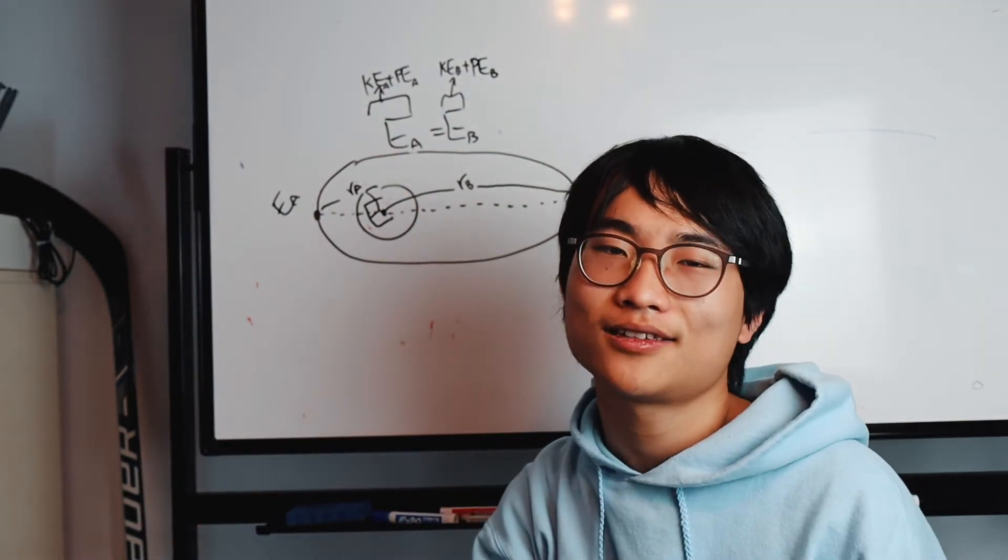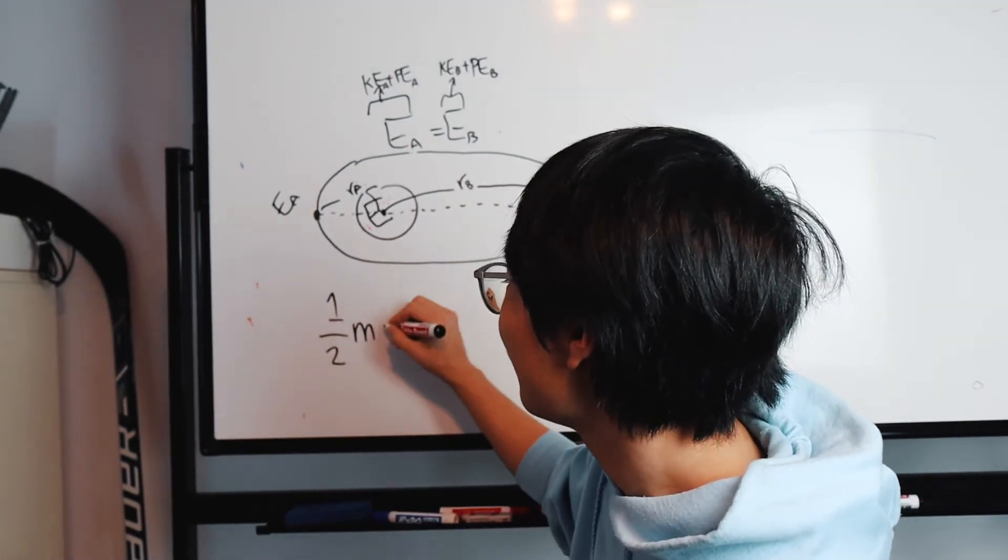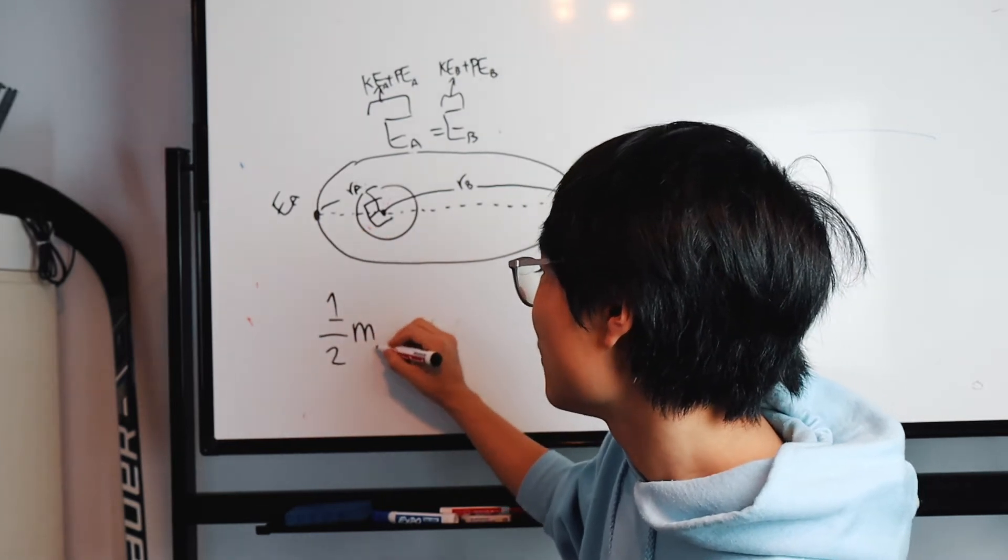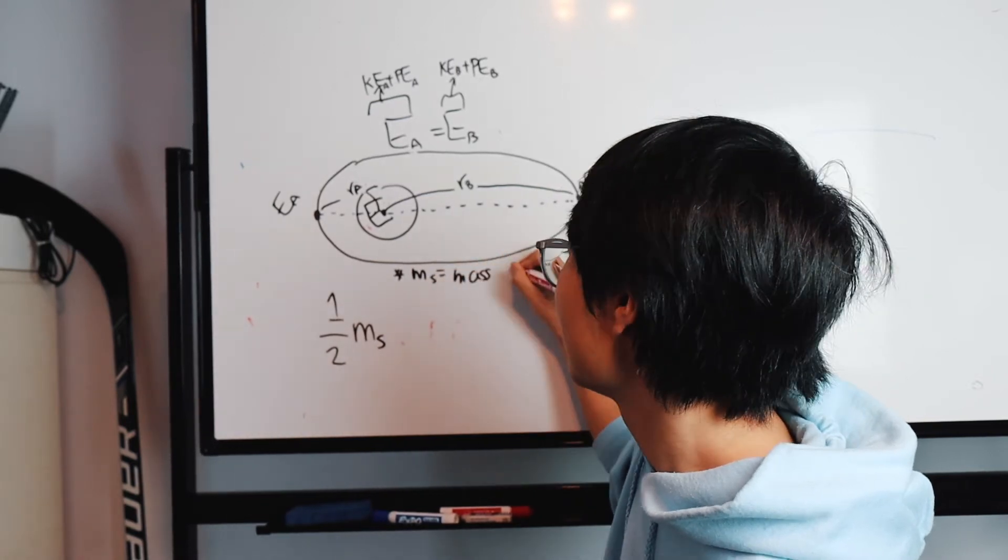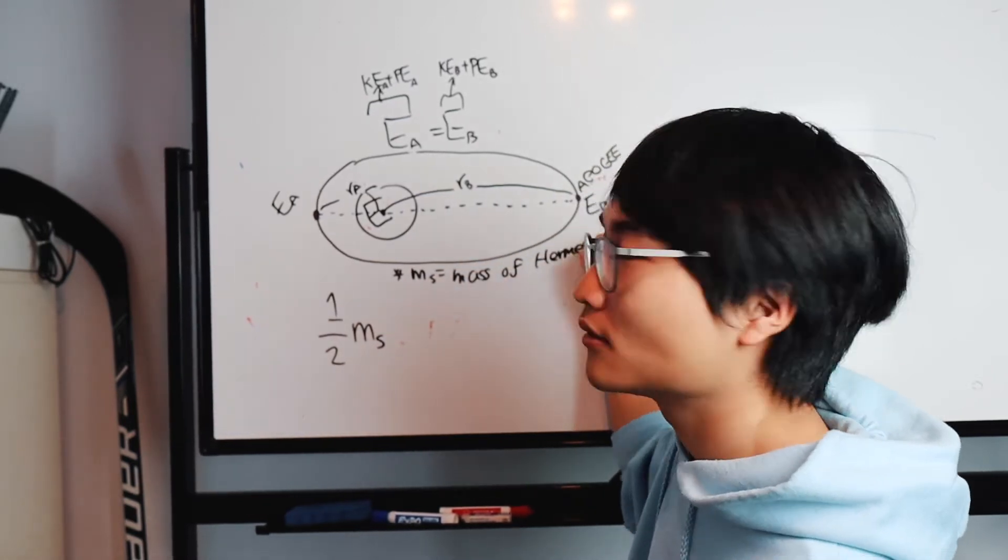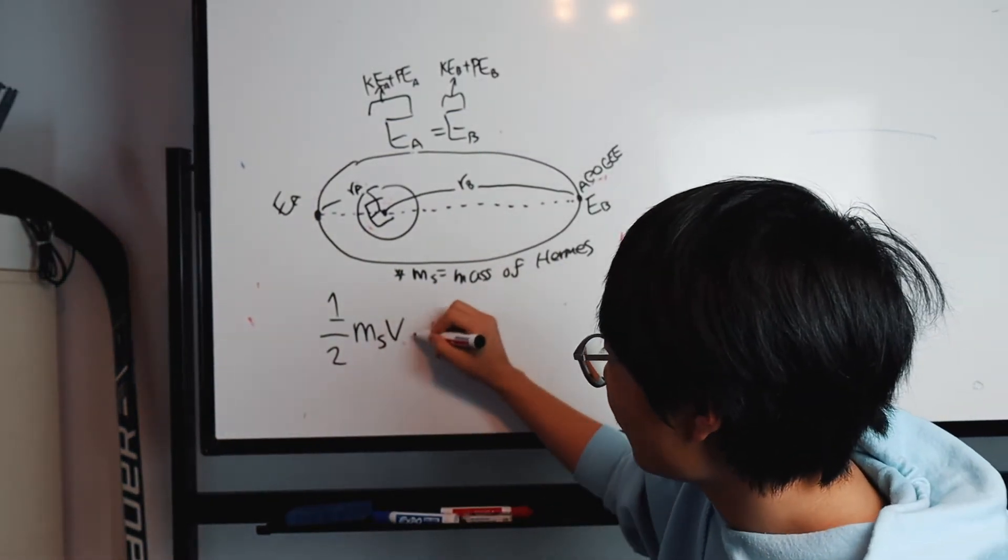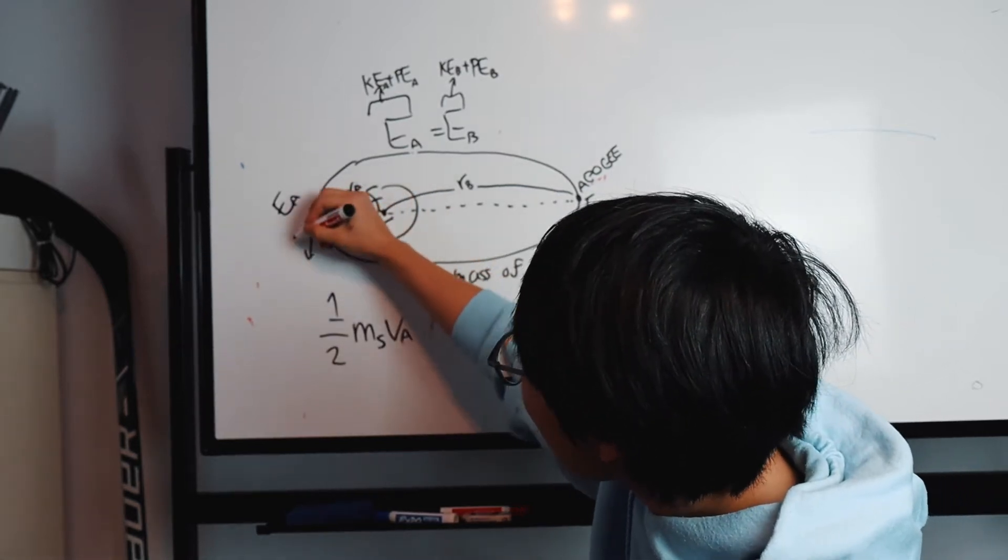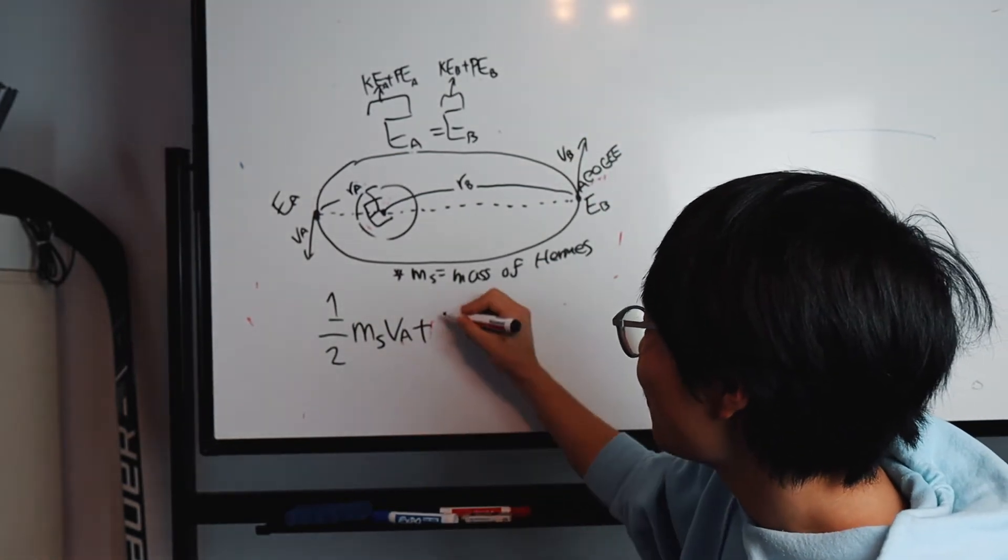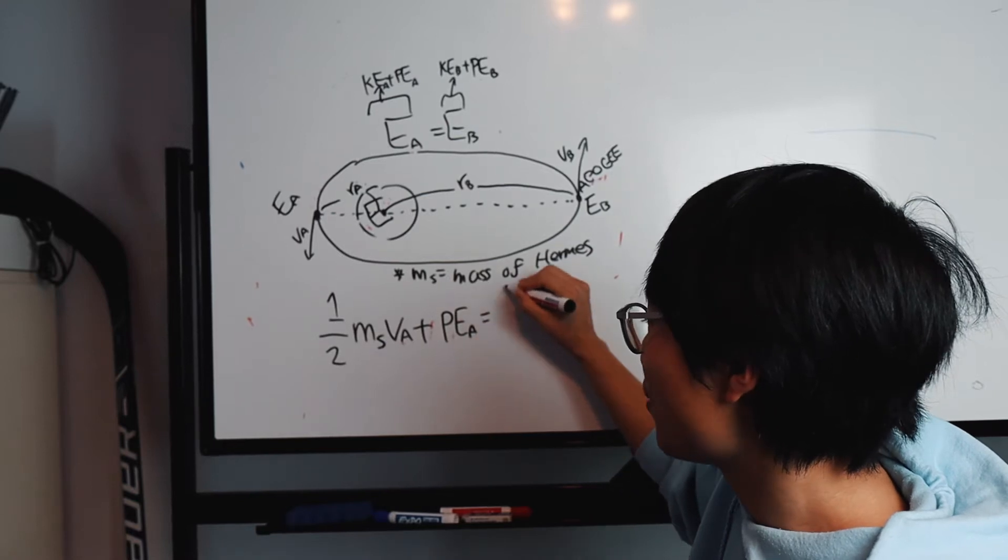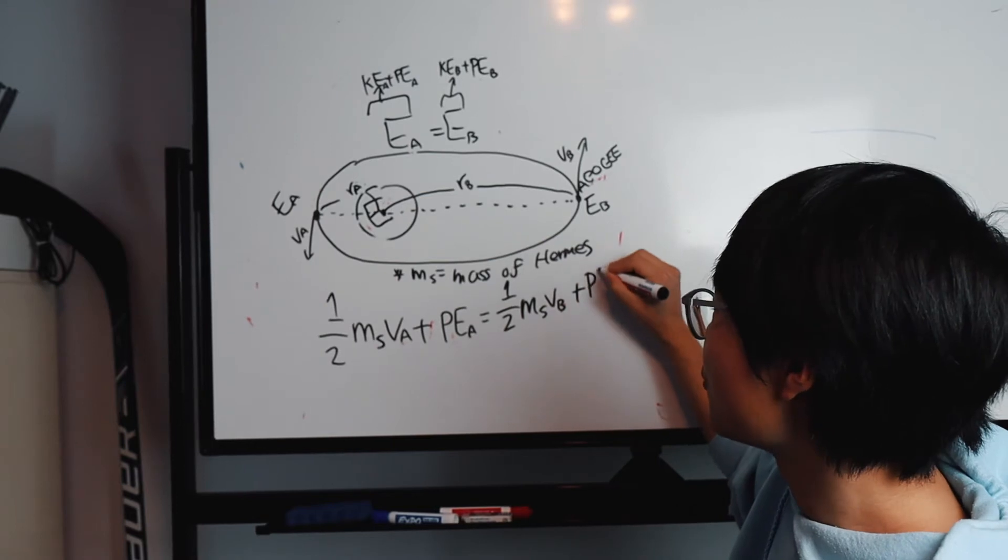What is the value of kinetic energy A? It's very simple. We learned it before. It's 1/2 times M, mass being the mass of the spacecraft Ms, mass of Hermes times the velocity Va. This is Va and this is Vb. The equation for potential energy at point A equals 1/2 Ms Vb squared plus potential energy at point B.